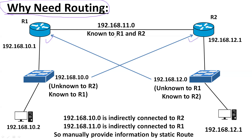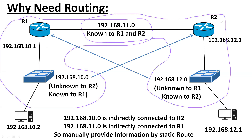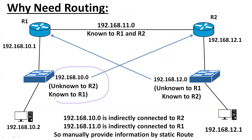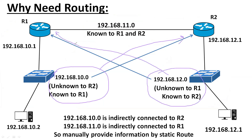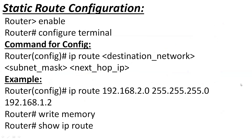Why do we need routing? Let's assume we have two different routers, R1 and R2. When we provide IP addresses, the direct network information is automatically provided to the router. Routers are already aware of their directly connected networks. But if I talk about the indirectly connected network — this network is not known to R2, and this network is not known to R1. That is why we have to manually provide the indirectly connected network information to the routers in case of static routing.